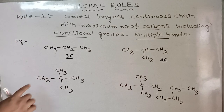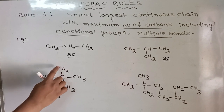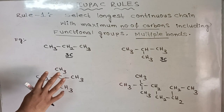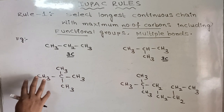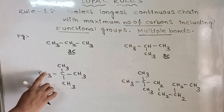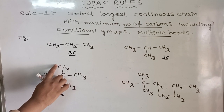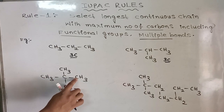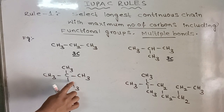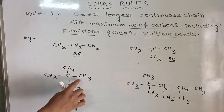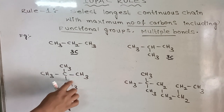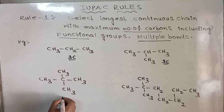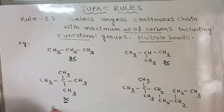In this example, counting in all ways gives 1, 2, 3. While selecting the chain, it should not have any breaks. If you give the numbering 4, the chain becomes discontinuous — the chain is broken. So you should not select that chain. The maximum number of carbons here is also 3 carbons.